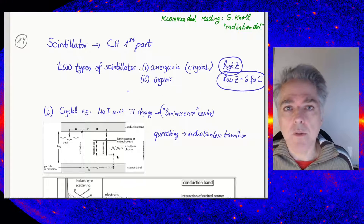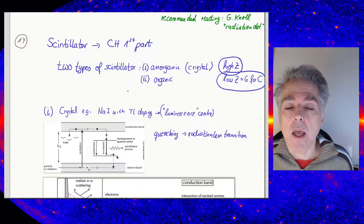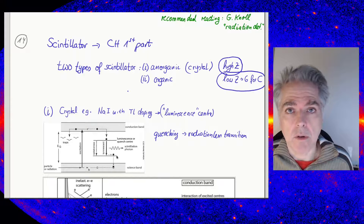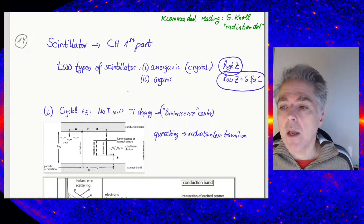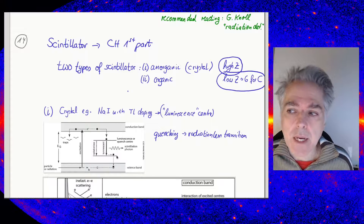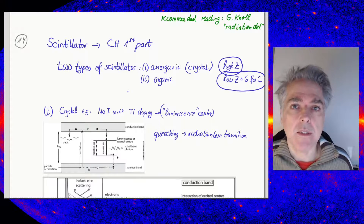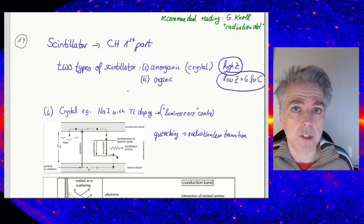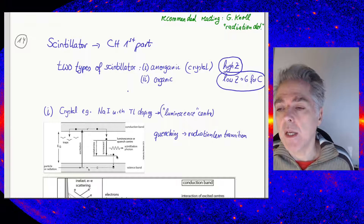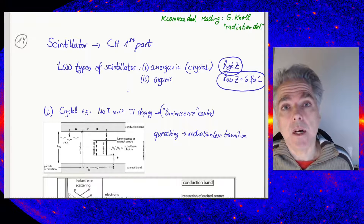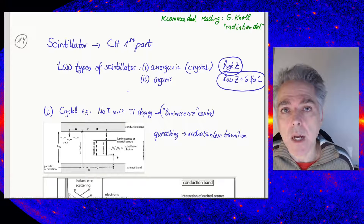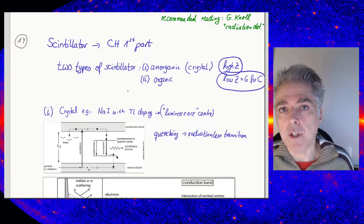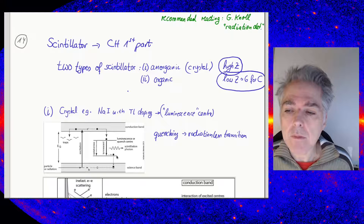Roughly speaking, there are two types of scintillators: inorganic or crystal-type scintillators and organic scintillators. Inorganic scintillators are made of materials with a large charge number Z, are solid, and more massive. Organic scintillators are made of carbon-based molecules and therefore have a charge number of around six.